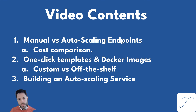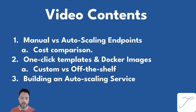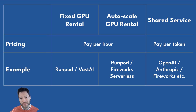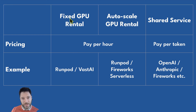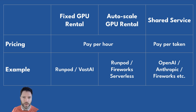By the end of the video, you should be able to deploy a full inference service, including setting up an API endpoint that external users can hit, with all routing handled internally and distributed among the GPUs you have rented. To start, let's look at the broad approaches. There's the shared service approach — how you're inferencing with OpenAI, Gemini, Anthropic, etc. Then there's the fixed GPU rental, where you rent a fixed number of GPUs. And then there's the auto-scaling or serverless approach where you rent GPUs but scale the number according to demand.